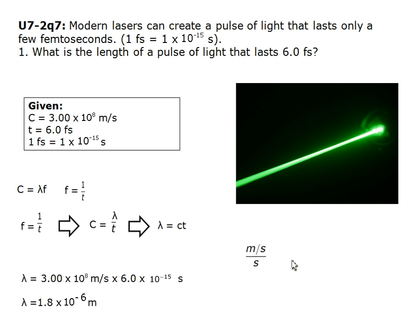Unit check: m/s divided by s — the seconds cancel out, so the unit remaining should be meters.